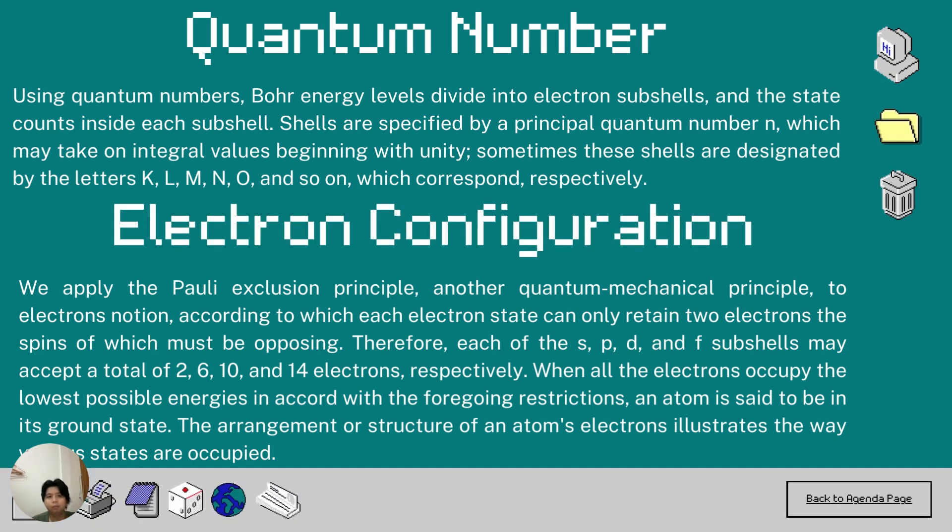For the quantum number, using quantum numbers, Bohr energy levels divide into electron subshells and the state count inside each subshell. Shells are specified by a principal quantum number which may take on integral values beginning with unity. Sometimes these shells are designated by the letters K, L, M, N, O, and so on, which corresponds respectively.